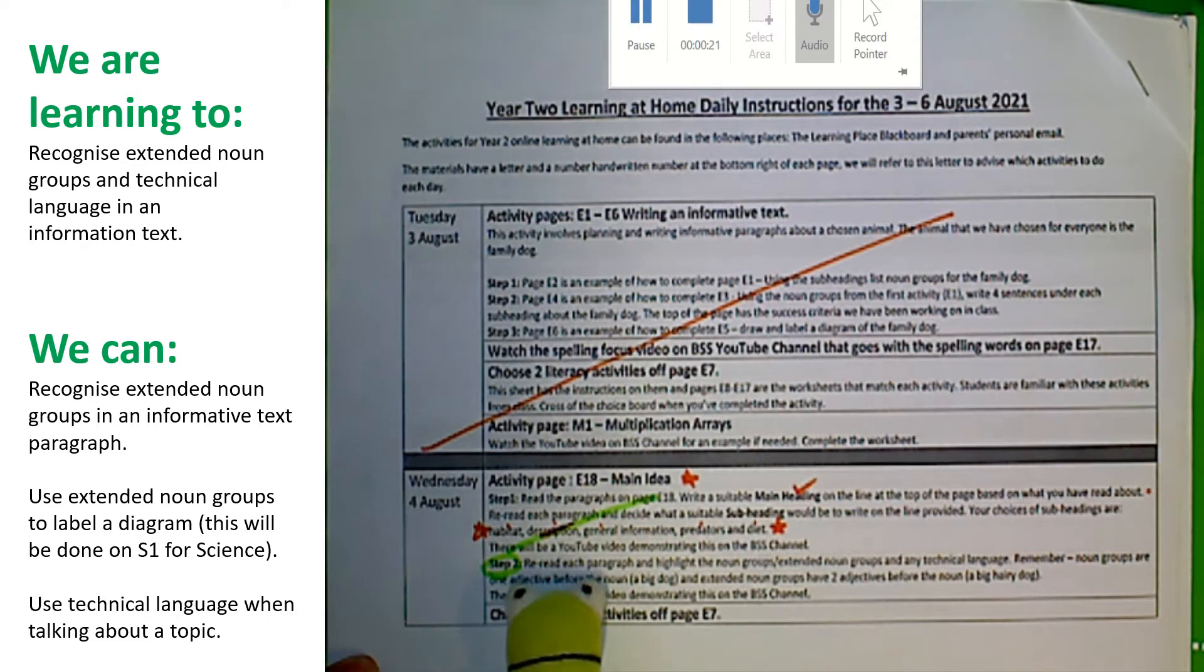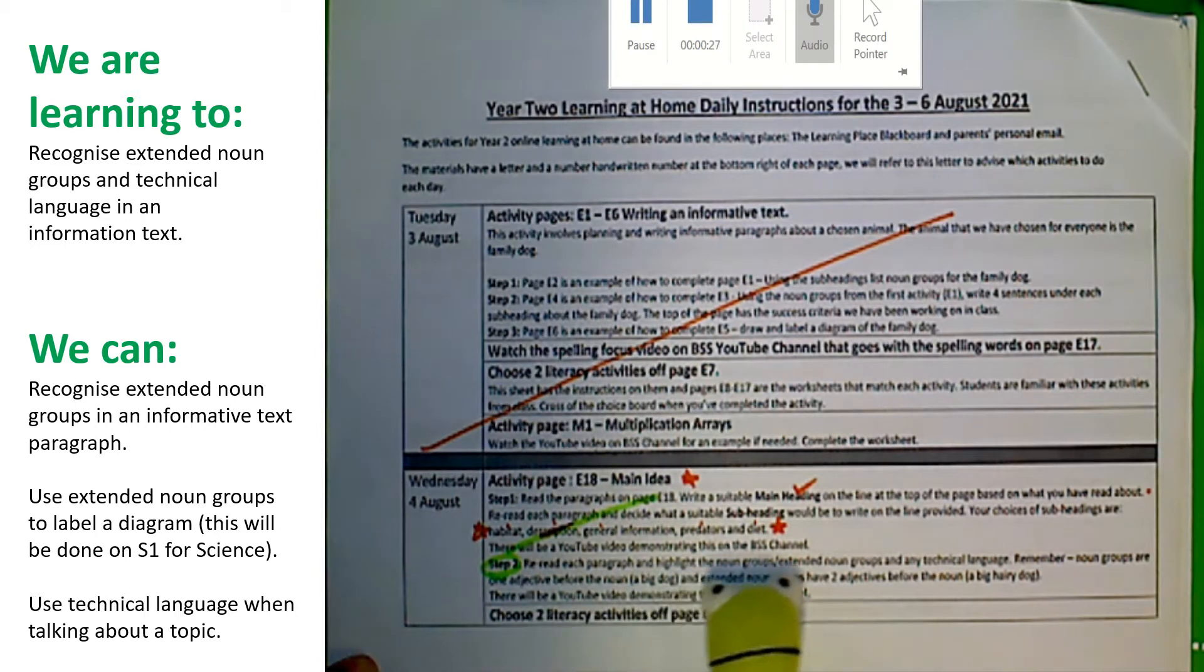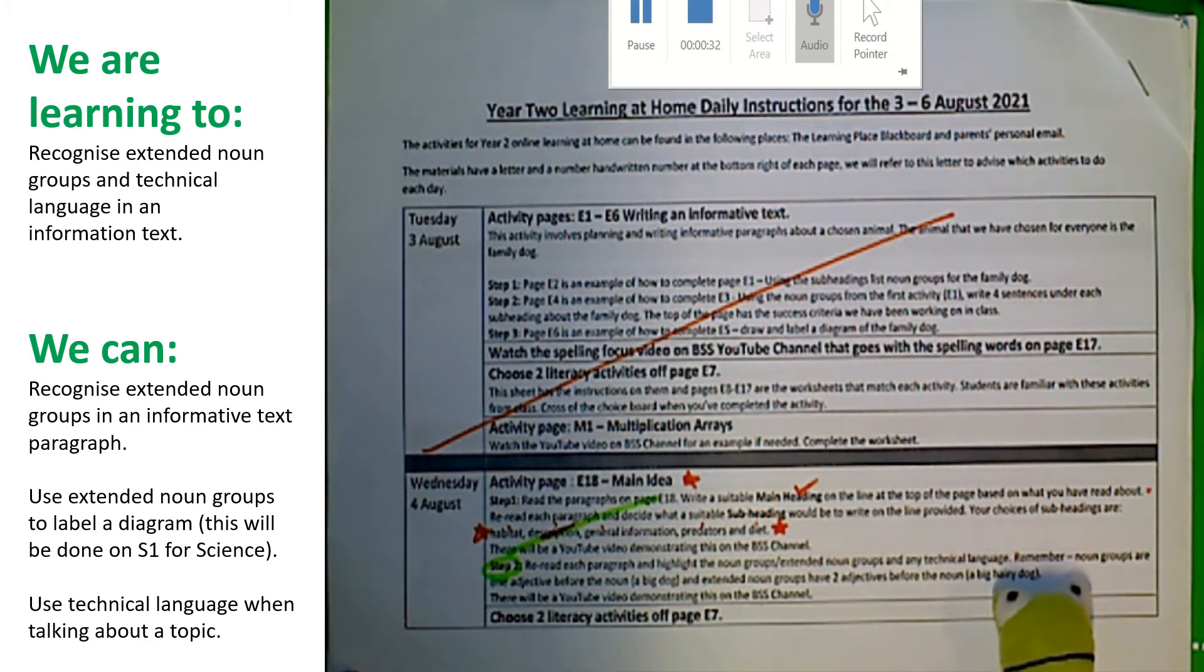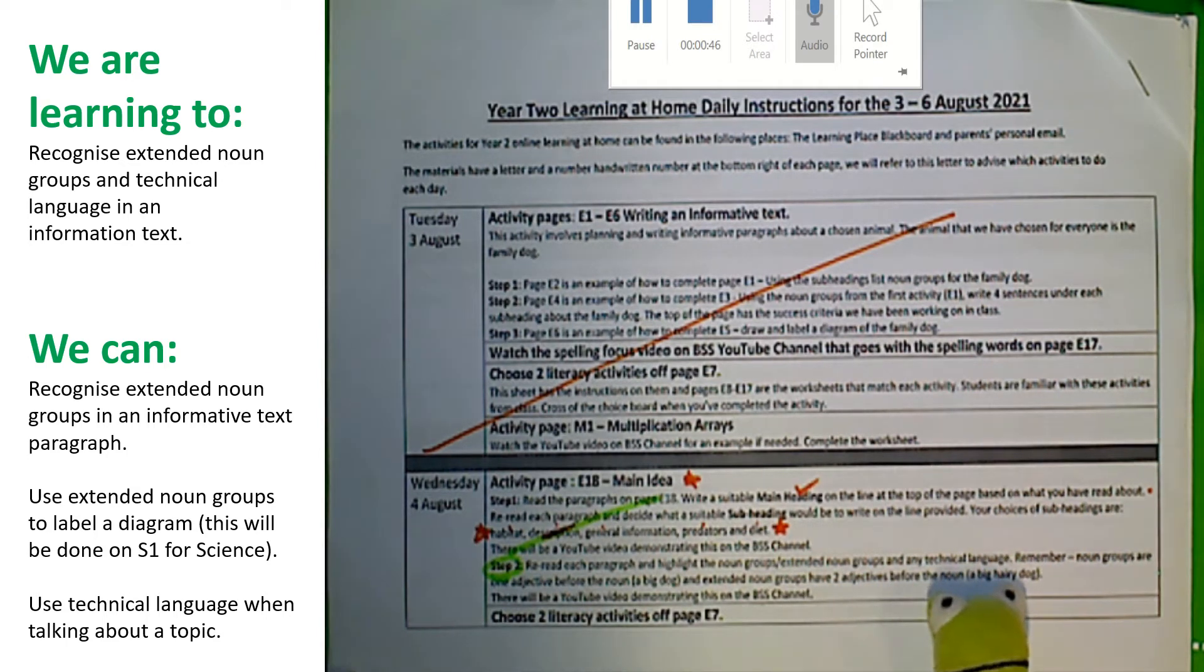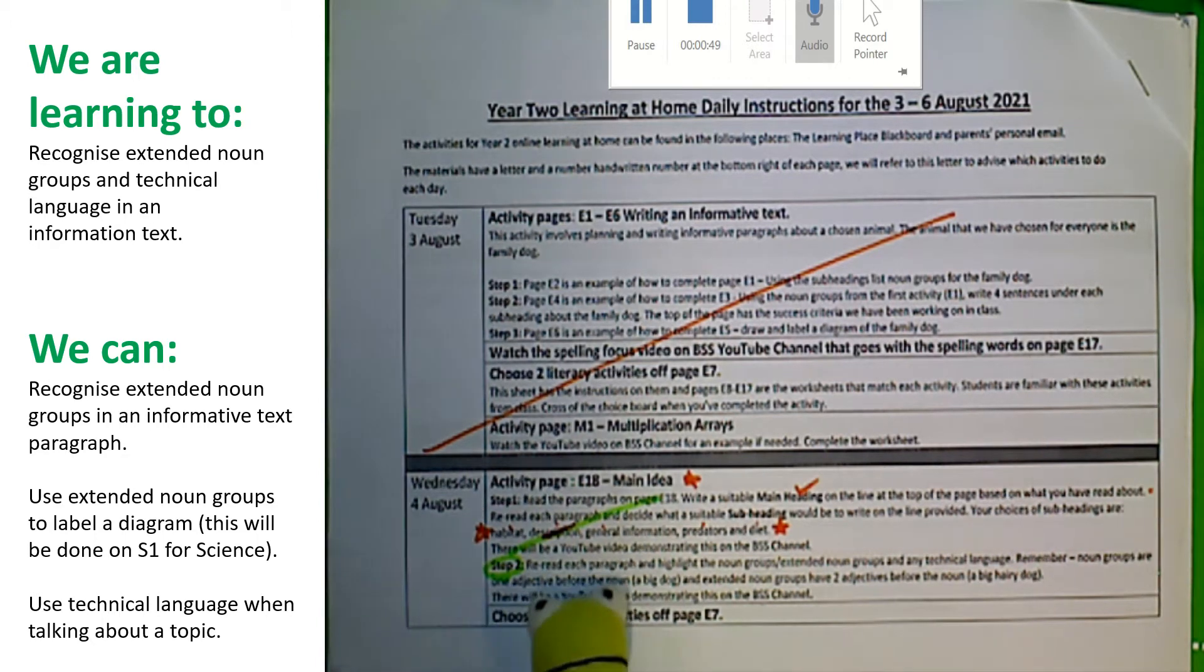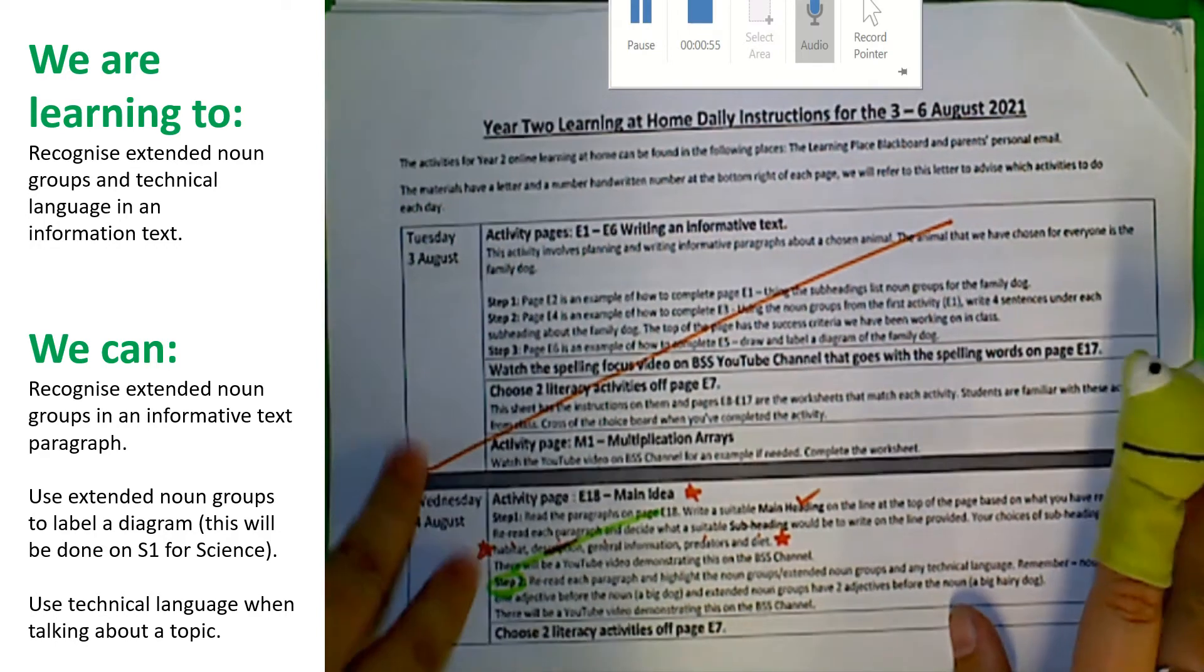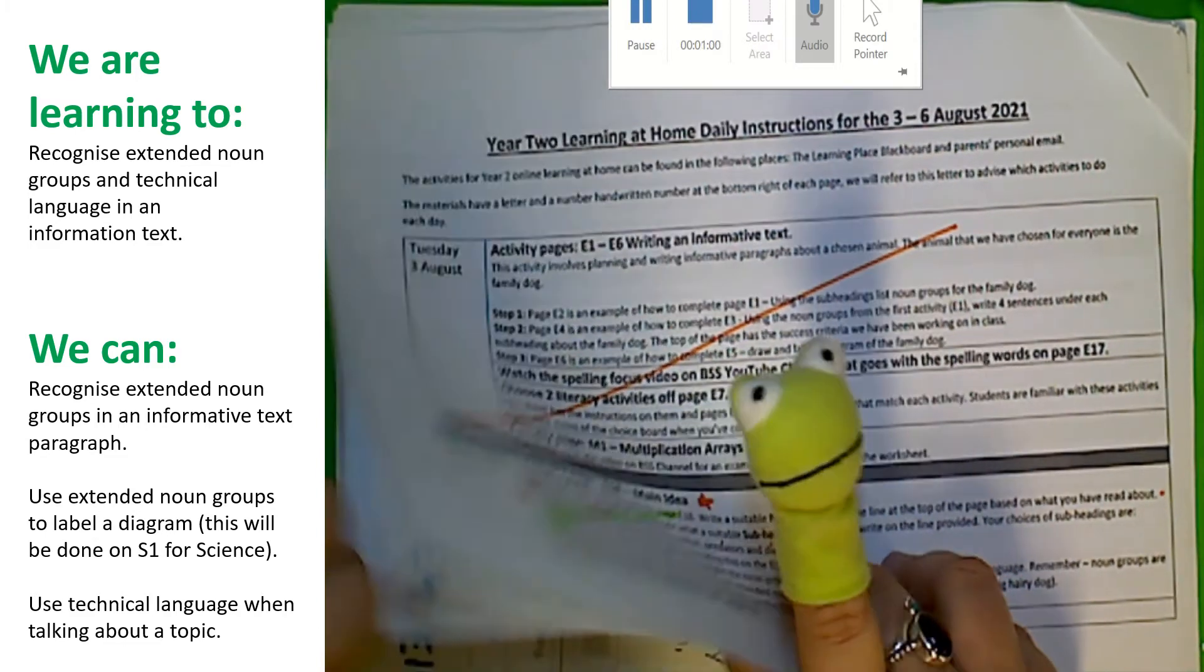Step two says reread each paragraph from sheet E18 and highlight the noun groups, extended noun groups, and any technical language. Remember, noun groups are one adjective before the noun, so for example a big dog. And an extended noun group has two adjectives before the noun, for example a big hairy dog. There's a clip that you can watch to help you do it.